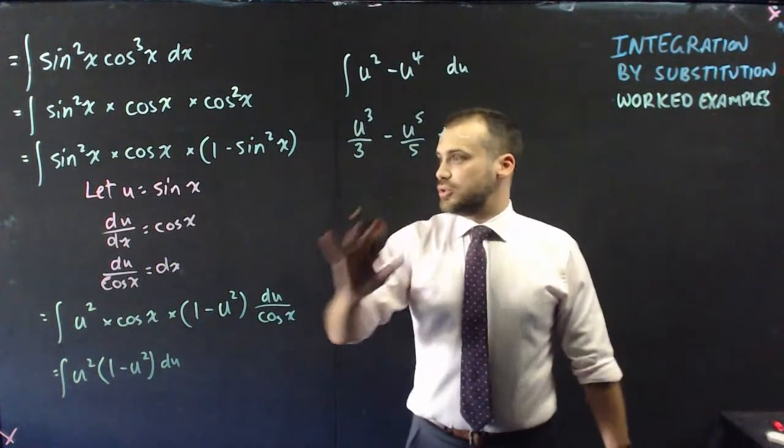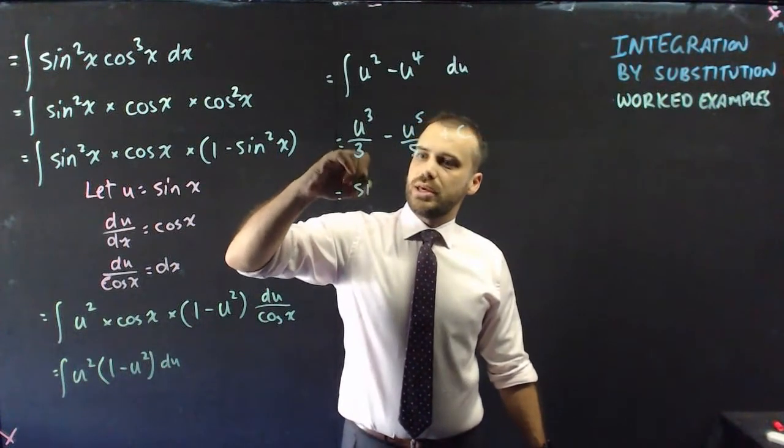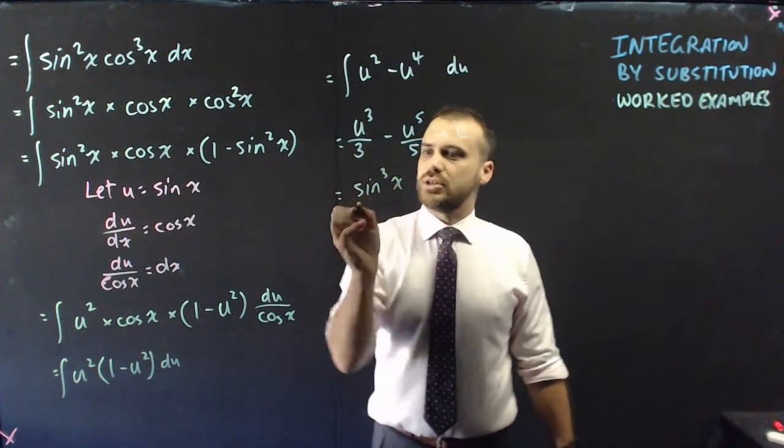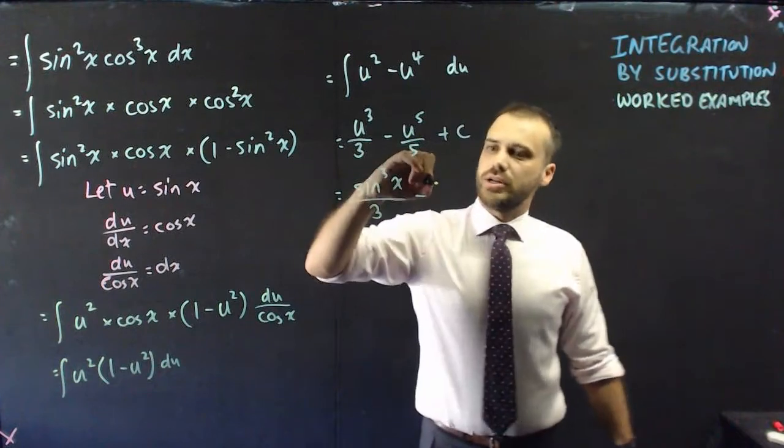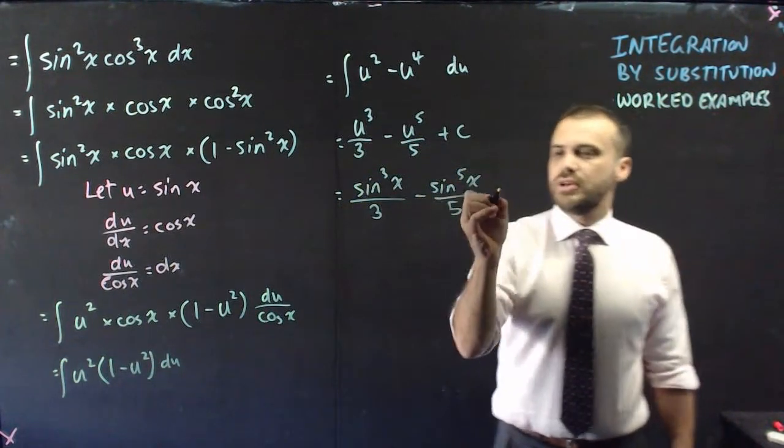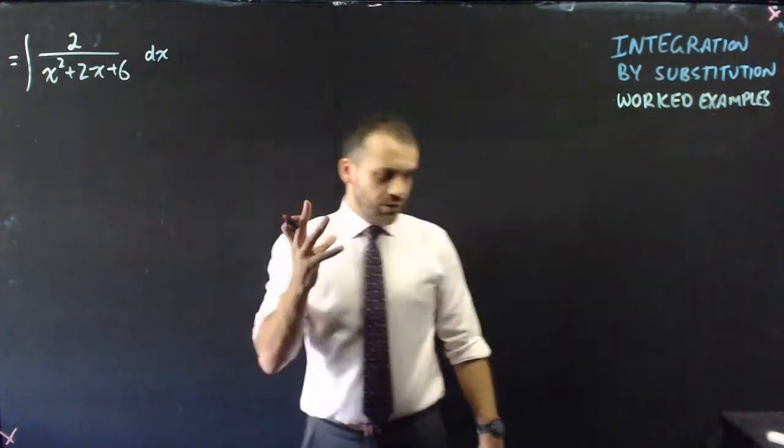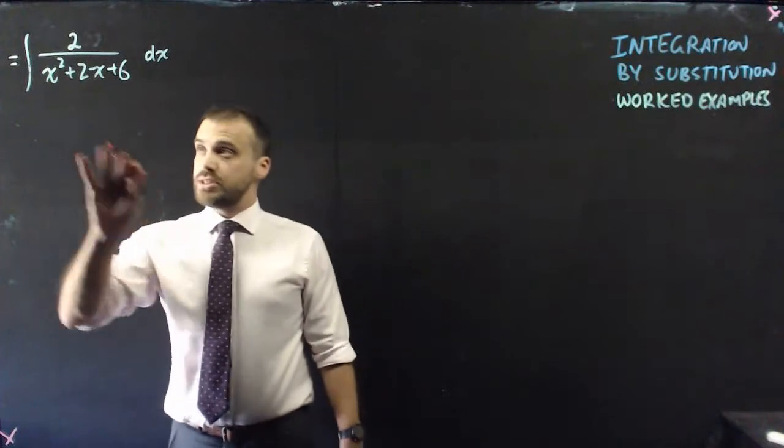Finally, we know that u originally was sine x. So we get sine cubed x over 3 minus sine 5x over 5. And then a plus c on the end. All right, that really ramped up. All right, let's look at this one here now.